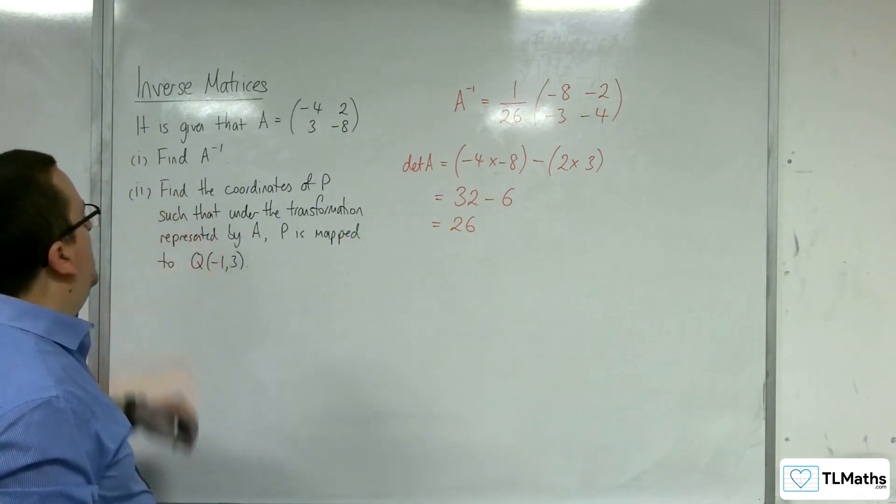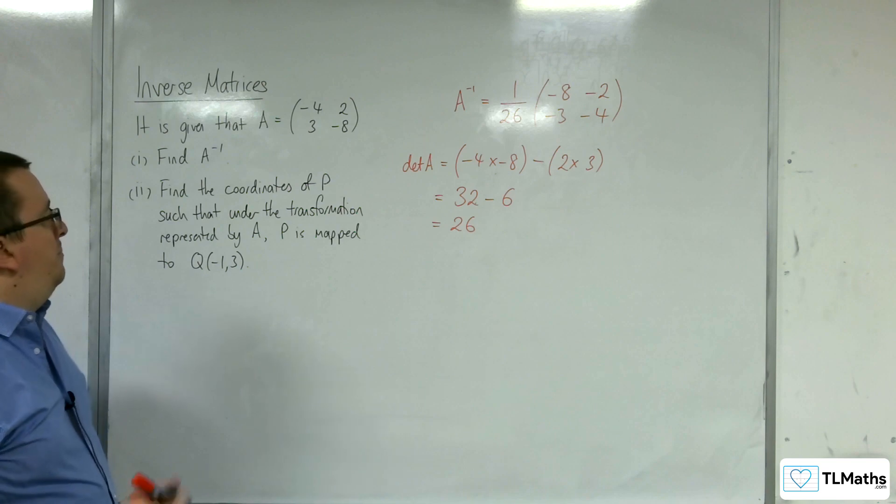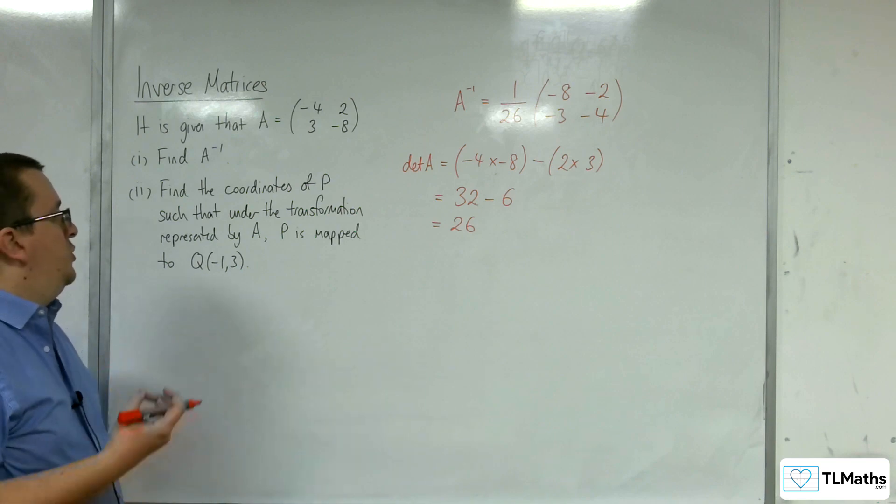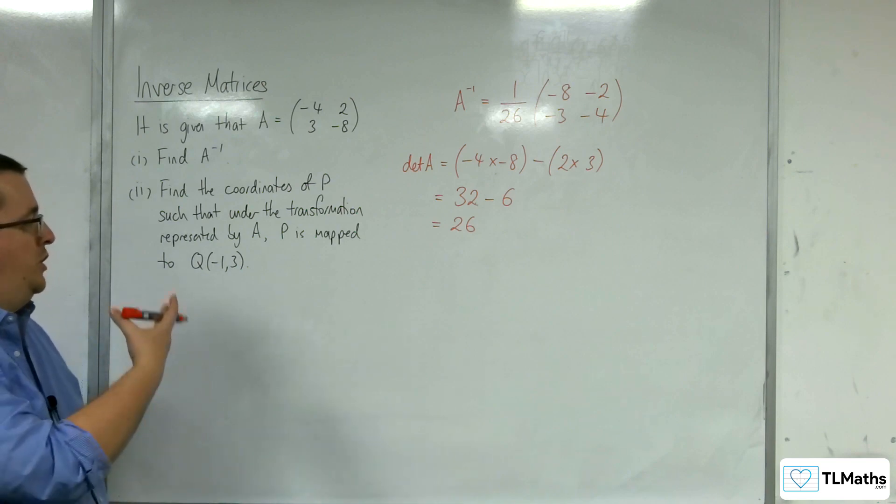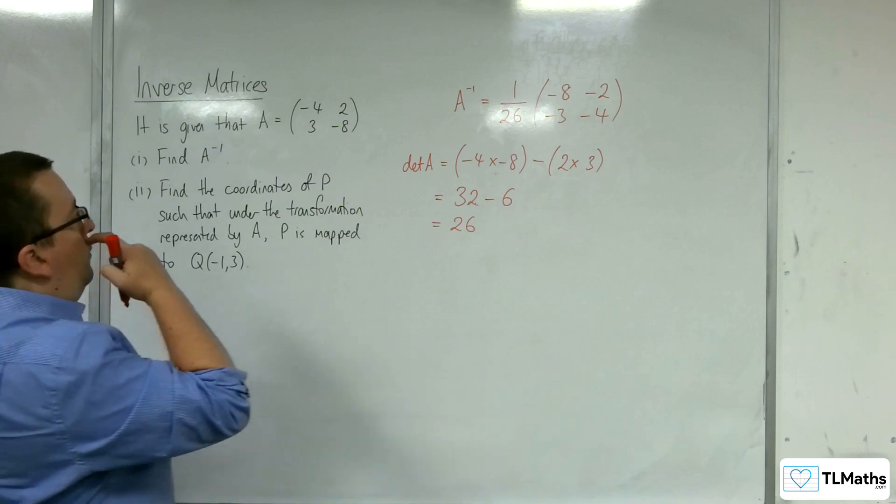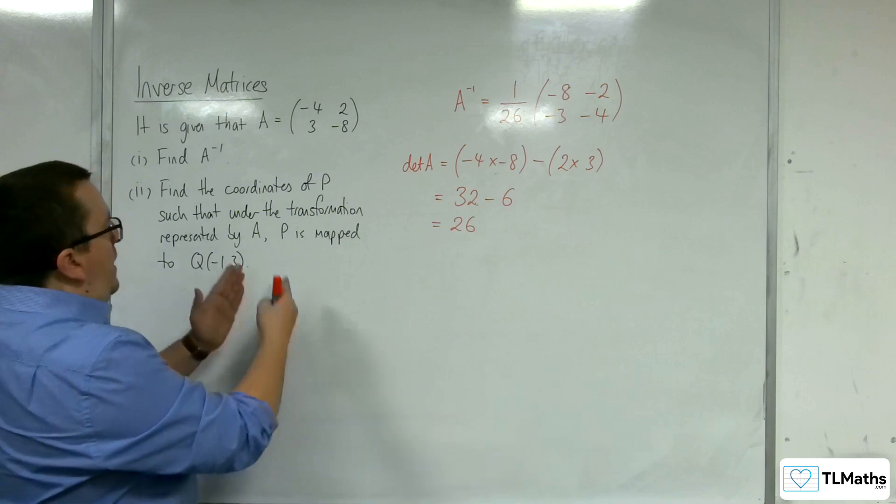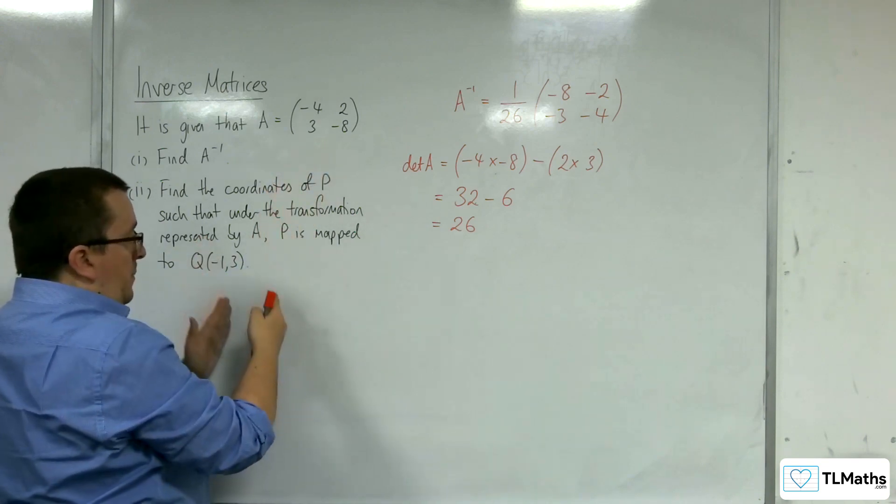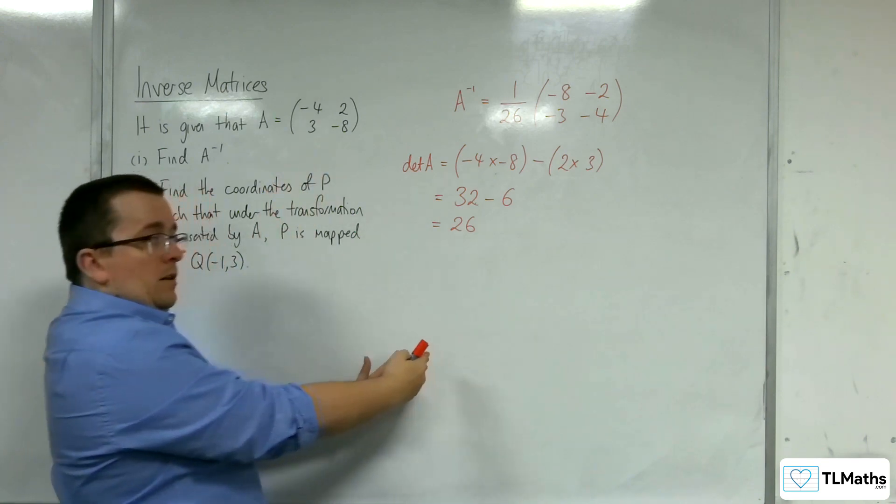Part 2, find the coordinates of P such that under the transformation represented by A, P is mapped to Q, which has coordinates minus 1, 3. So, what we're saying is that when we apply A to P, we get Q.